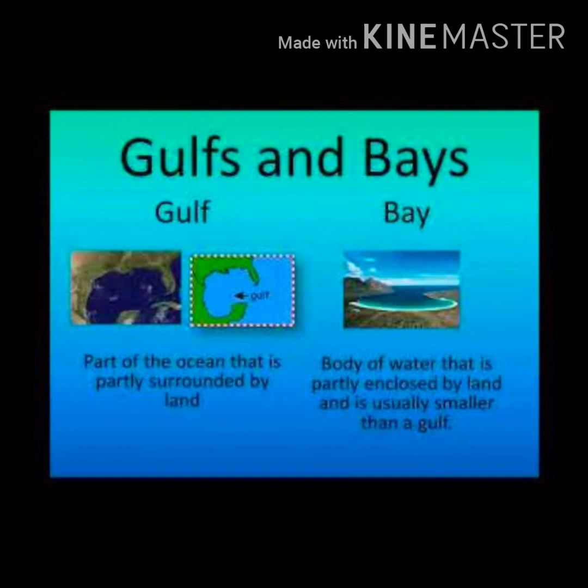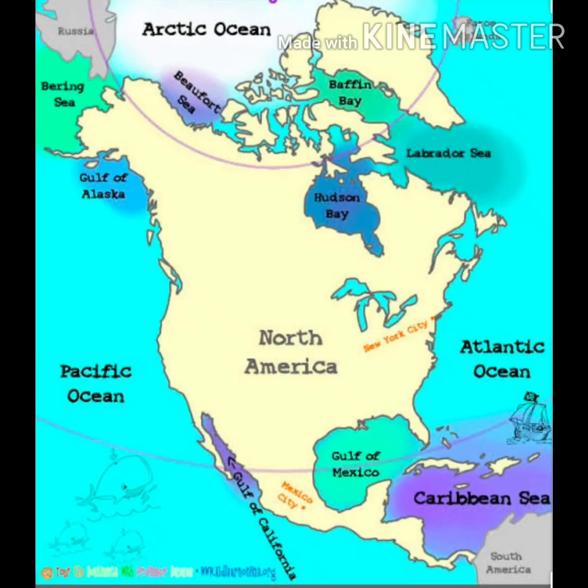Gulfs and bays are water bodies surrounded by land with a wide mouth which opens to a sea or ocean — three sides surrounded by land and one side open toward the sea or ocean. A gulf is larger in size than a bay.